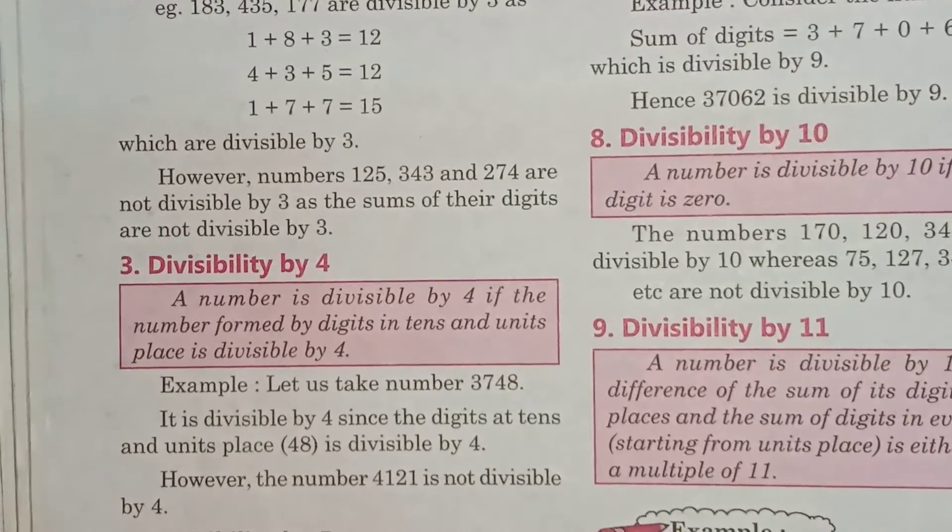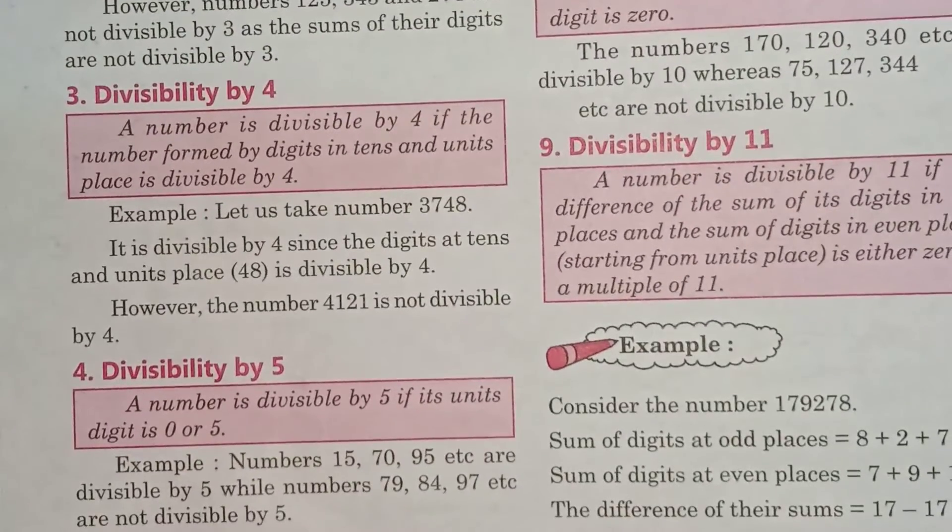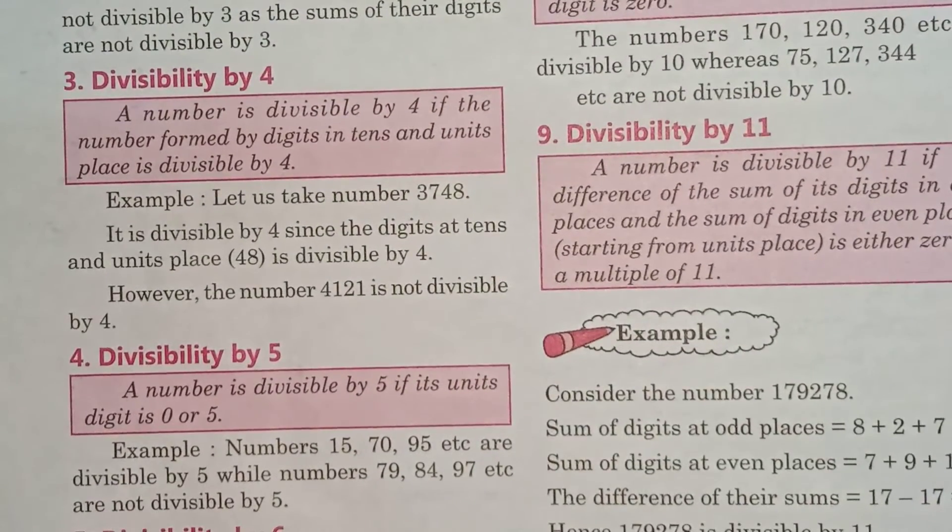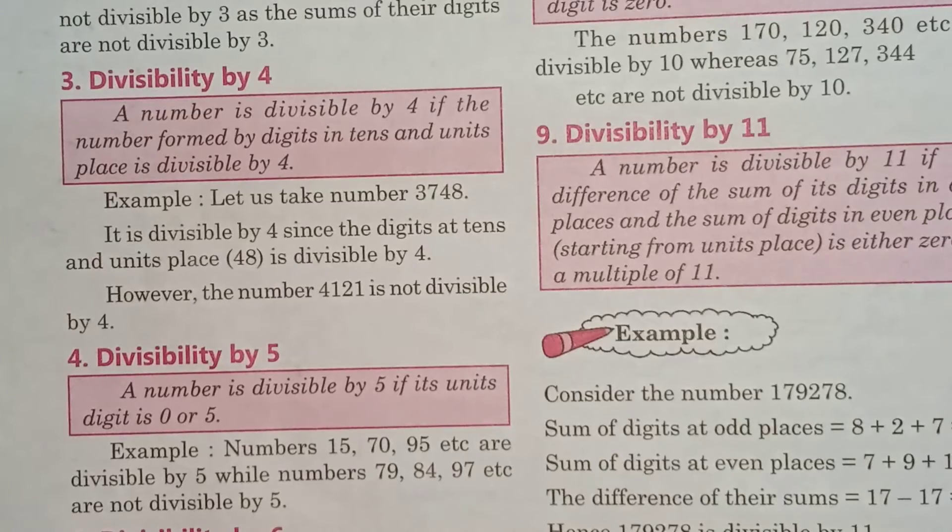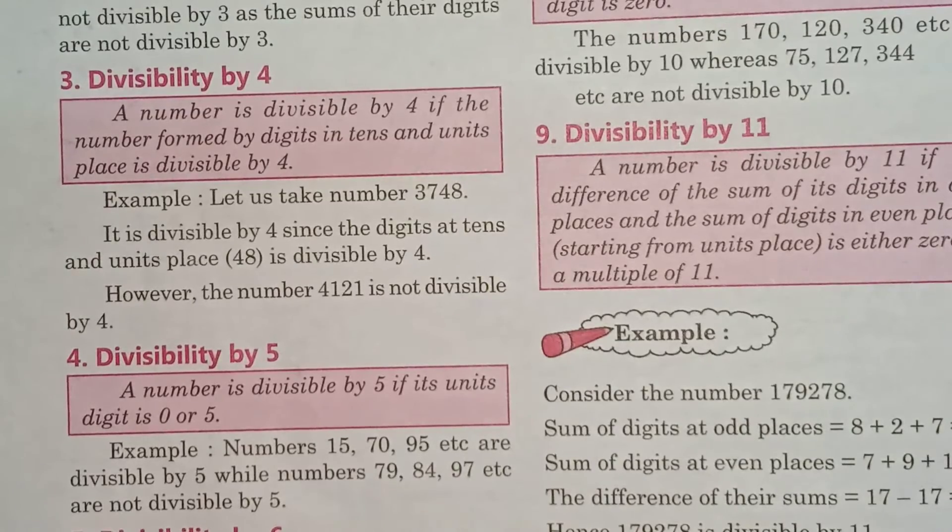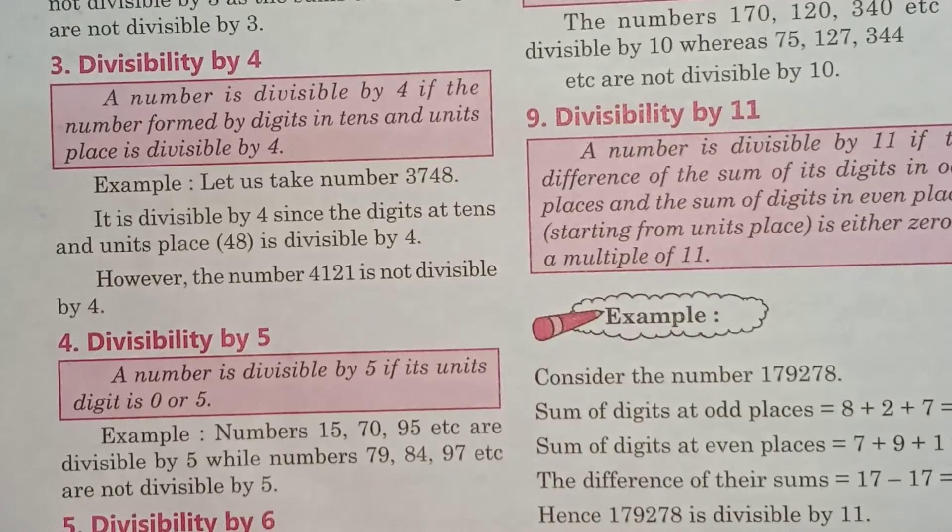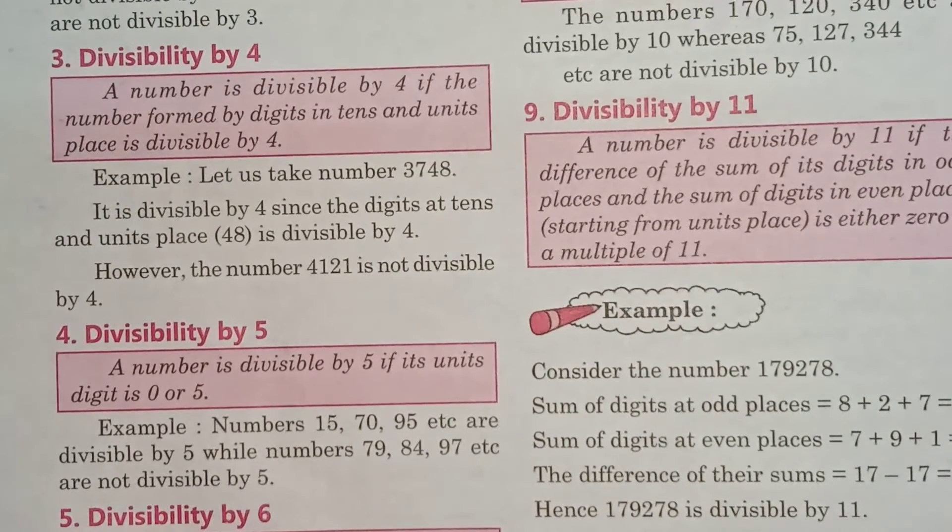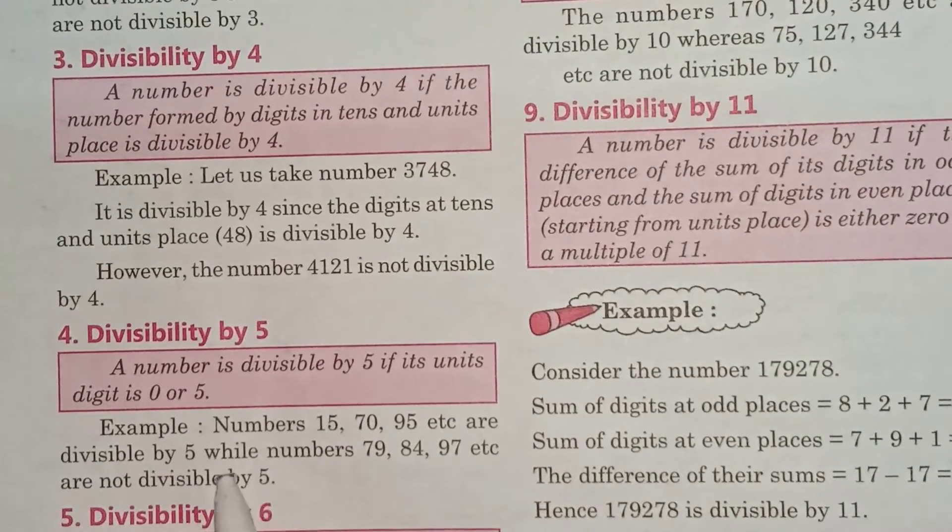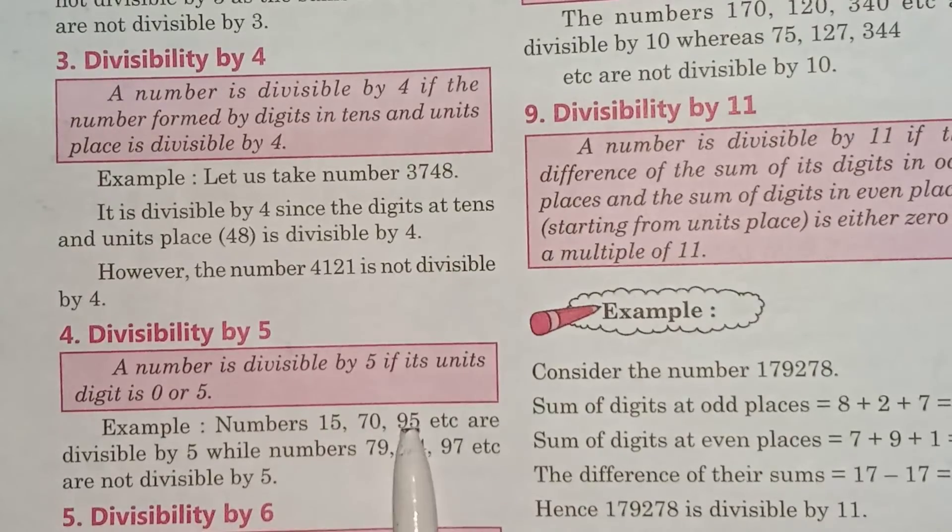The next divisibility rule is for 5. A number is divisible by 5 if its units digit is 0 or 5. For example, numbers 15, 70, 95, etc. are divisible by 5 because their units digit is 0 or 5.